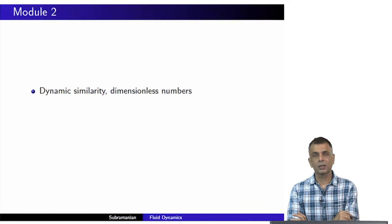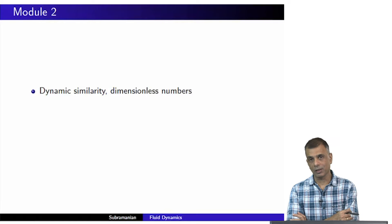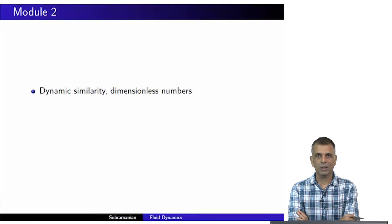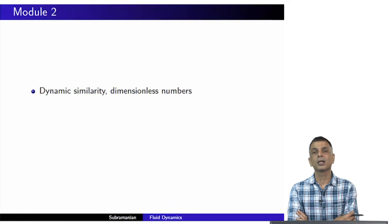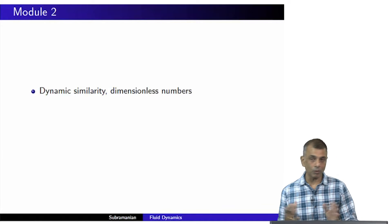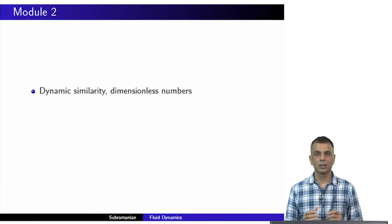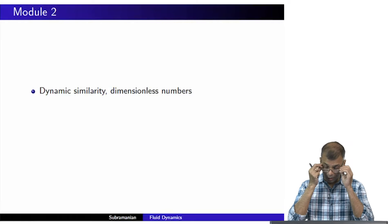We will do the Reynolds number and we will introduce and try to understand what dynamic similarity is all about. Having discussed dynamic similarity, we will also revisit the problem of lift on an aircraft wing that we discussed briefly some time ago. It is a very interesting application of the dynamic similarity idea. Specifically, we will outline a simple treatment of what is called the Kutta-Joukowsky theorem.